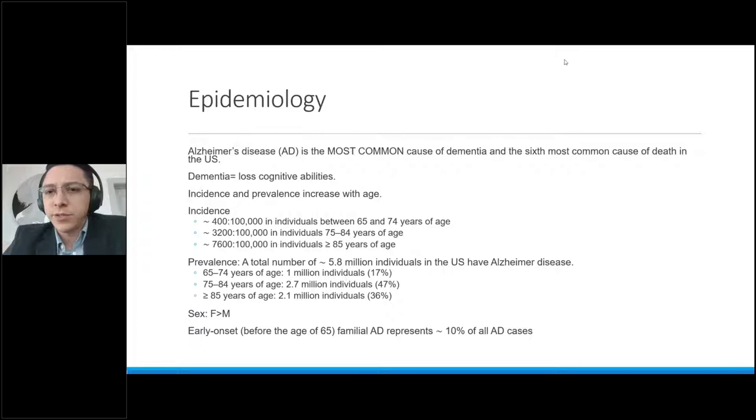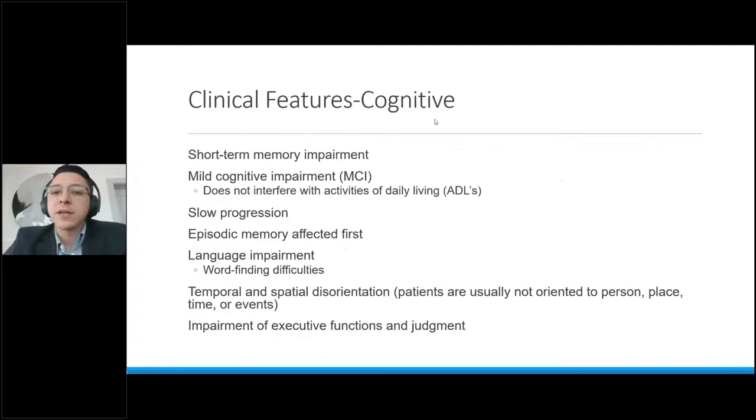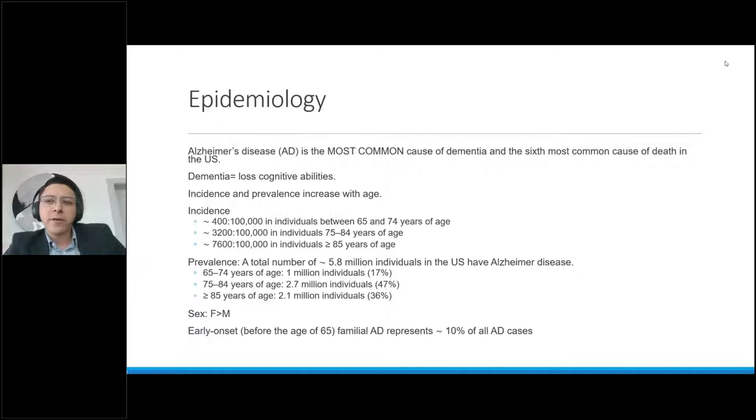Now, why is Alzheimer's disease so important? This is why we talk about the epidemiology. Alzheimer's disease is the most common cause of dementia, and it is the sixth most common cause of death in the United States. We talk about dementia. We are talking about an umbrella term that describes the loss of cognitive abilities.